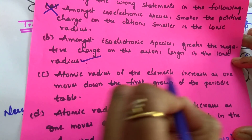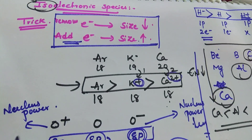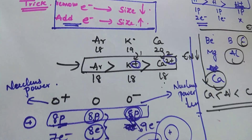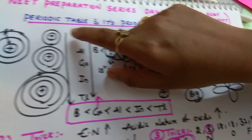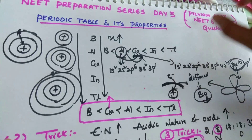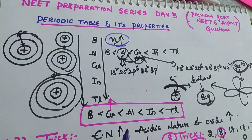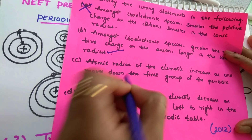Atomic radius of the elements increases when you move from top to bottom in a group in the periodic table. What happens from top to bottom? Atomic radius increases. Why? Generally, number of shells increases, so atomic radius also increases. So this is also a correct statement.